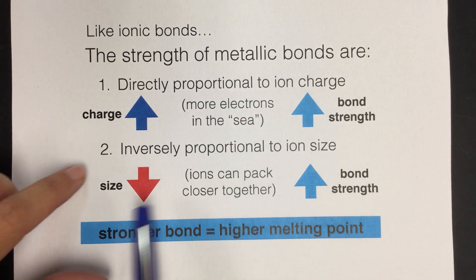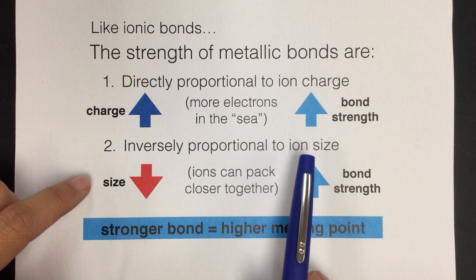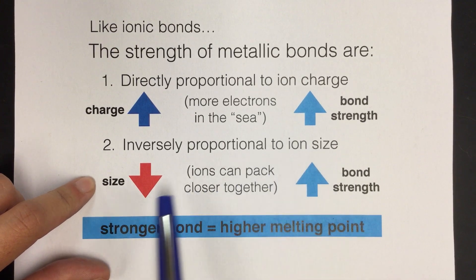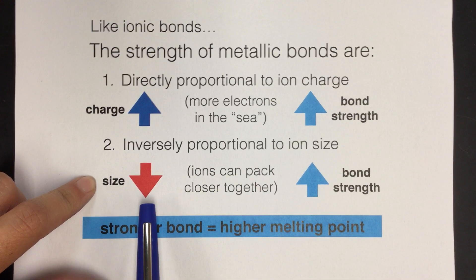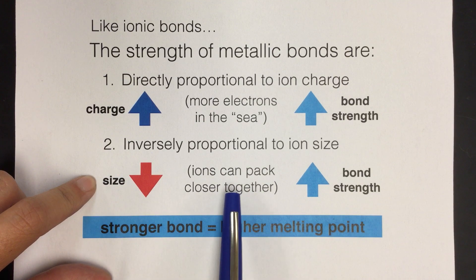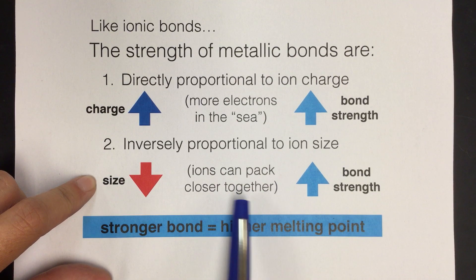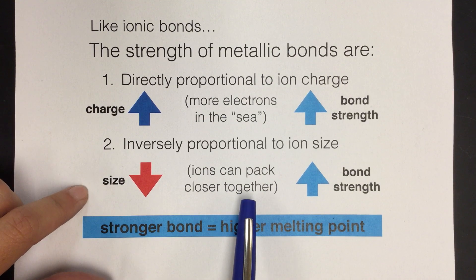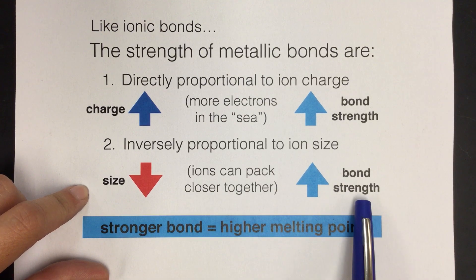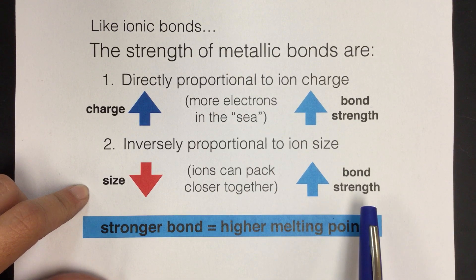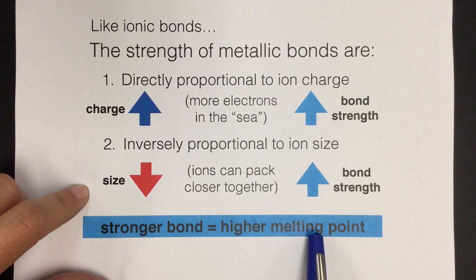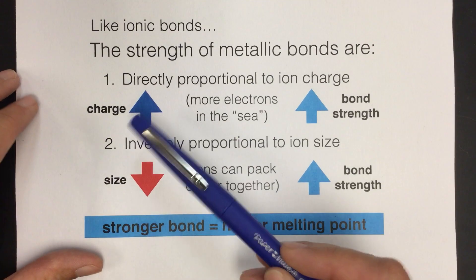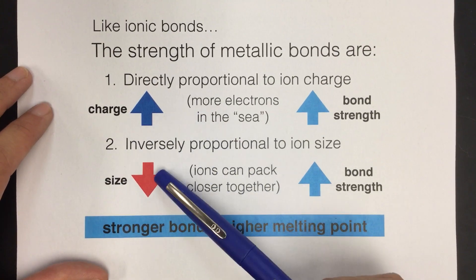The other factor is the size of the metal cations that are involved. If the size of the metal is smaller, then that means the ions can pack closer together. This is similar to ionic compounds. If they can get closer together, they'll have a greater bond strength, and if we have stronger bonds, we'll have higher melting point. So the two things we're going to look at when we do some of the problems are charge and size.